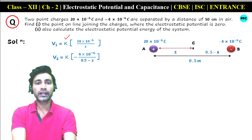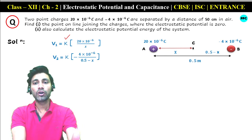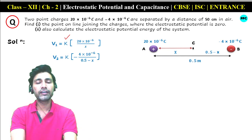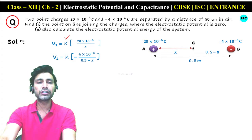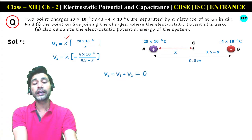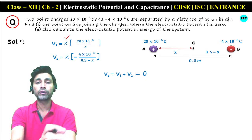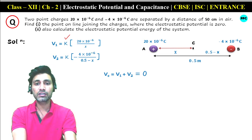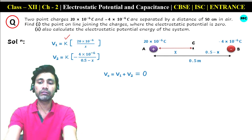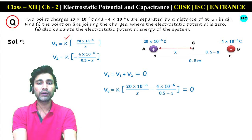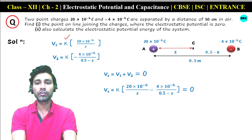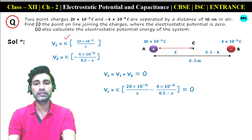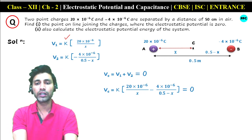For V2, I placed the charge as minus 4×10⁻⁶, and the distance as 0.5 minus X. To find the net potential at C, I add both V1 and V2 — one has positive potential and the other has negative potential at point C. The net potential at C must equal zero. So V1 plus V2 equals zero.